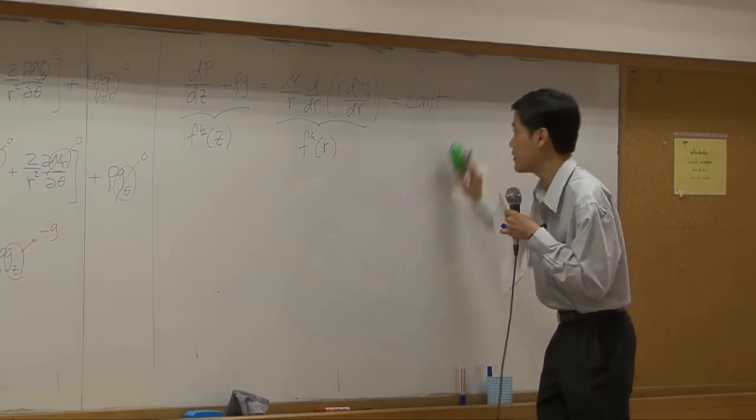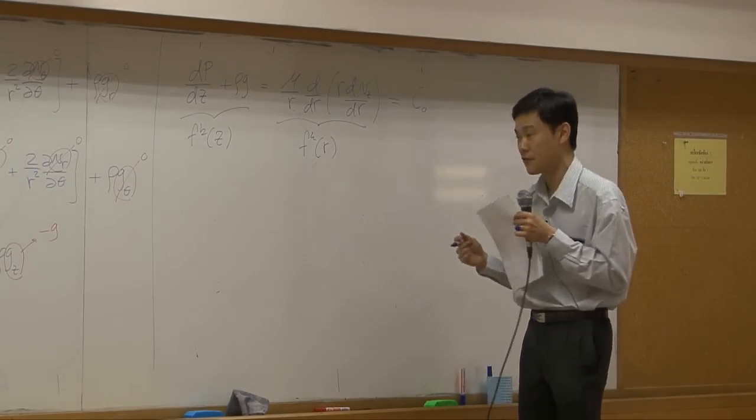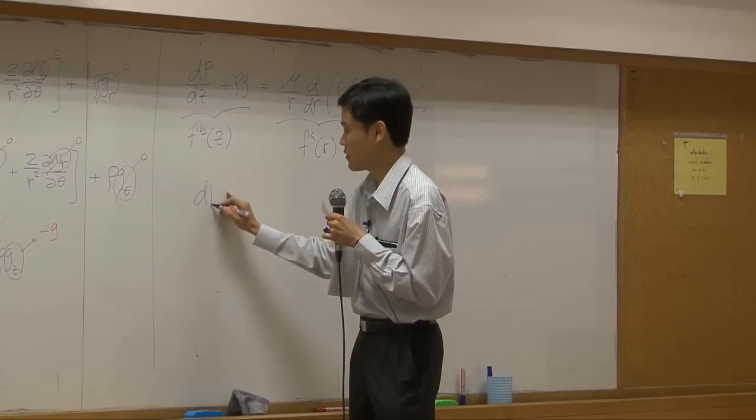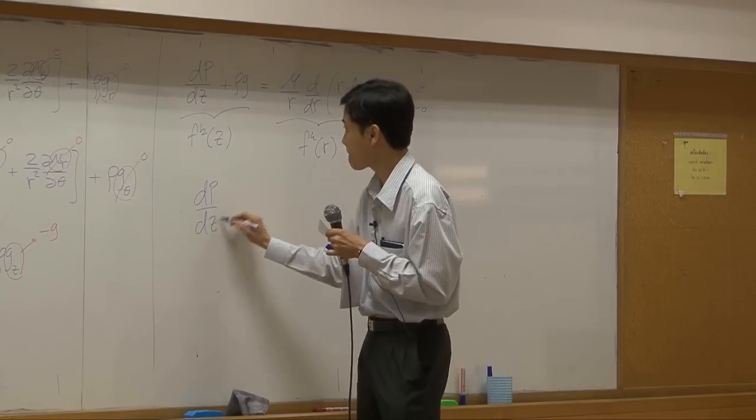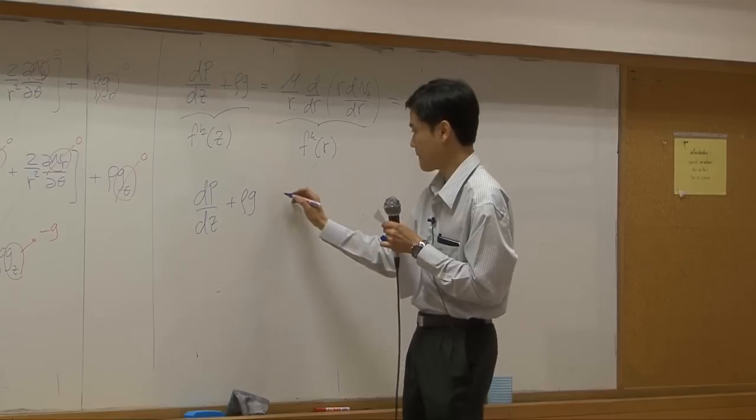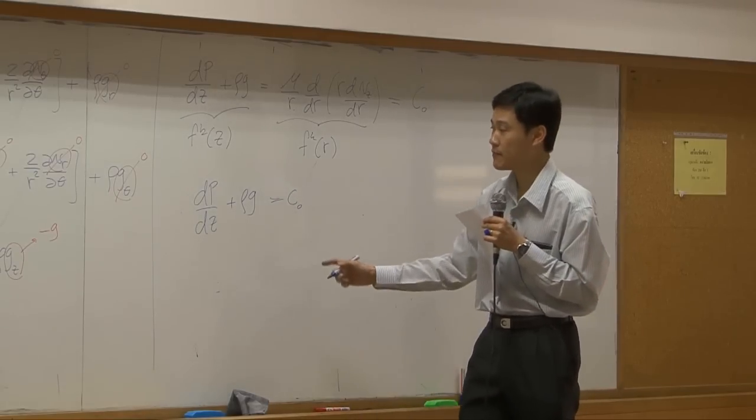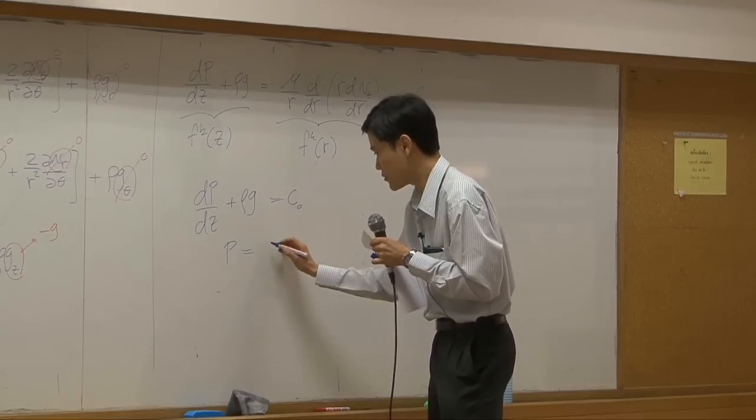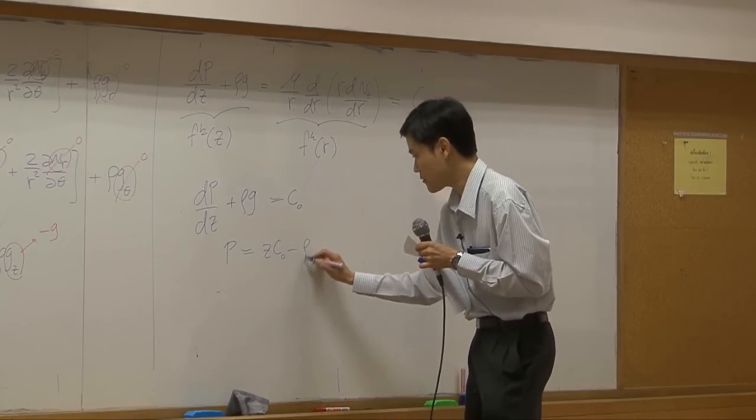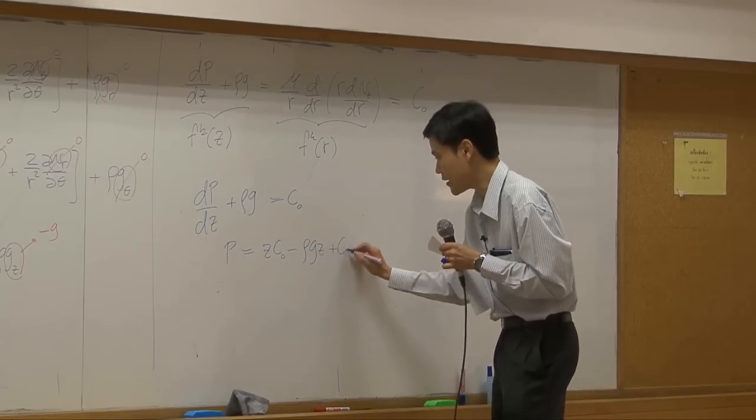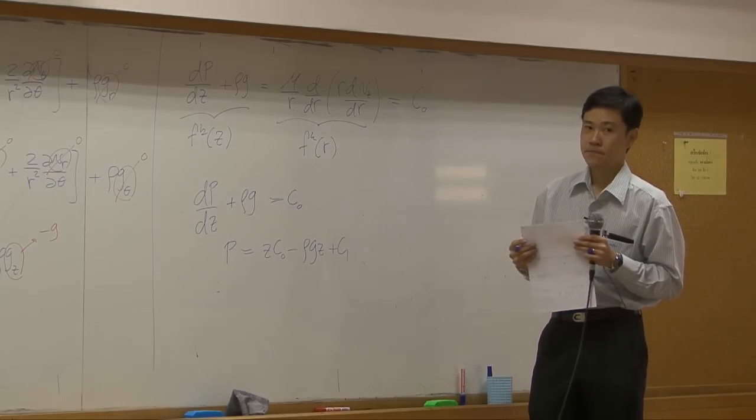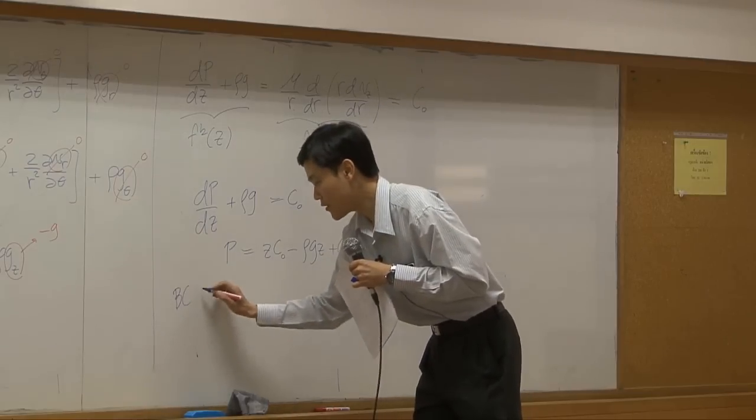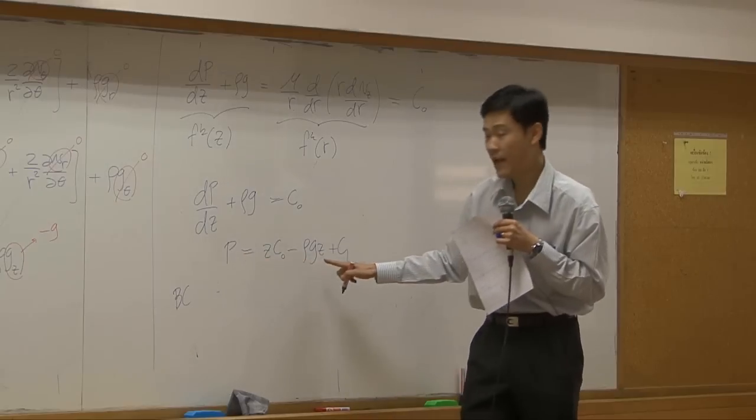So I'm going to say the constant here is equal to C0. Then I can split this equation into two parts. The first part is equal to C0. You can integrate them easily. Just move this one to the right hand side and integrate it. You get pressure equal to Z times C0 minus rho GZ plus another constant. In order to determine this constant, you will need boundary condition. Boundary condition is supposed to give you pressure at one specific location.